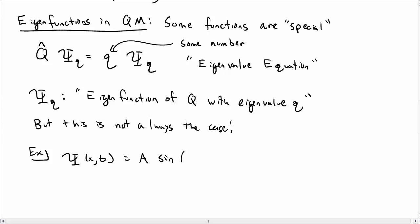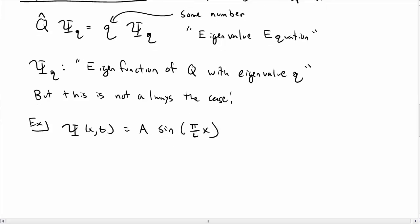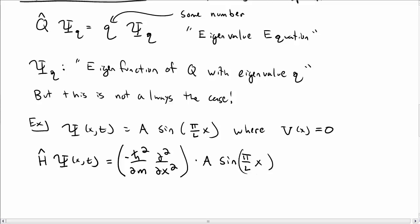But it's not always the case that a wave function is going to be an eigenfunction of an operator. So for example, let's take our wave function to be a sine of pi x over l. And then this is going to be in our box, our particle in a box, where the potential is zero in a certain region.